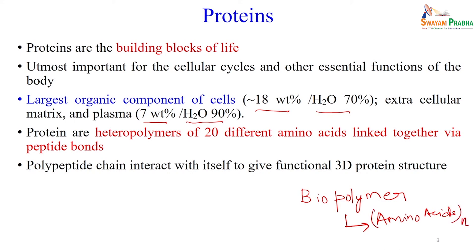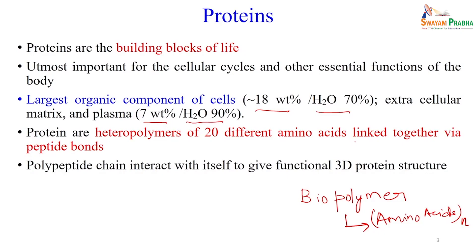N number of amino acids combine to make a protein. Proteins are heteropolymers of 20 different amino acids. The binding or linkage between two amino acids is known as the peptide bond. Amino acids are linearly linked by a peptide bond, which is NH-CO.